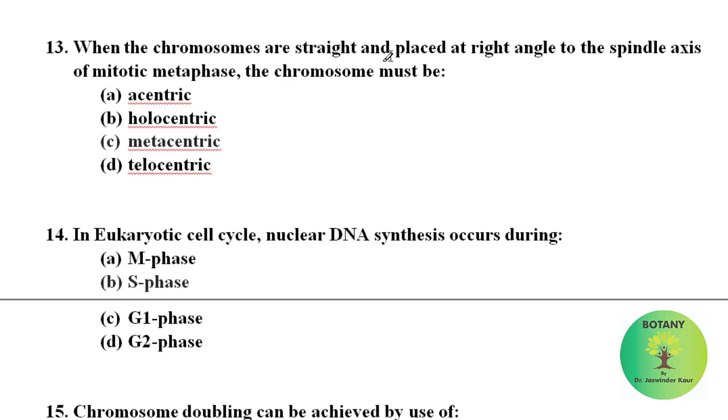When the chromosomes are straight and placed at right angle to the spindle axis at mitotic metaphase, the chromosomes must be metacentric chromosomes. In eukaryotic cell cycle, nuclear DNA synthesis occurs during the S phase. S phase is a synthetic phase of cell cycle.